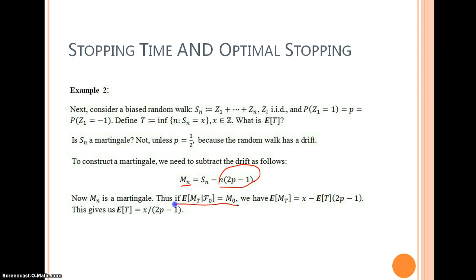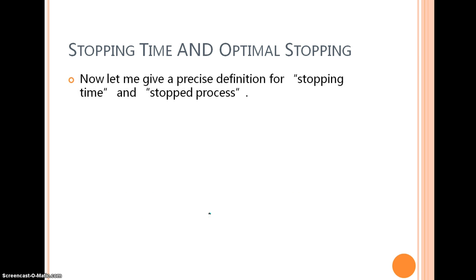So we will employ exactly the same method as we did in previous slides and get the expectation of the hitting time. Look at this result. Is there any special condition we should follow so that this result makes sense? Yes. Because this one is the expectation of time, it should be greater than 0. That gives us the condition that p should be larger than one half. Now we have finished these two very interesting examples and got a sense of the optimal stopping of martingale.